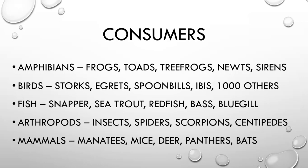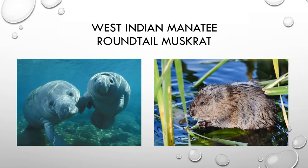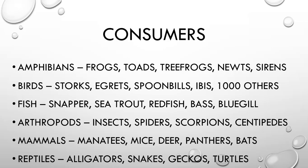Mammals of the Everglades include the usual forest animals: squirrels, mice, and deer, plus the endangered Florida panther, bobcats, bats, possums, and armadillos. One very special mammal found here is the manatee, also called a sea cow because it eats seagrass. Some people think manatees inspired the mermaid myth. They move very slowly, and many have scars on their backs from boat propellers. The round-tail muskrat is also native to the Everglades.